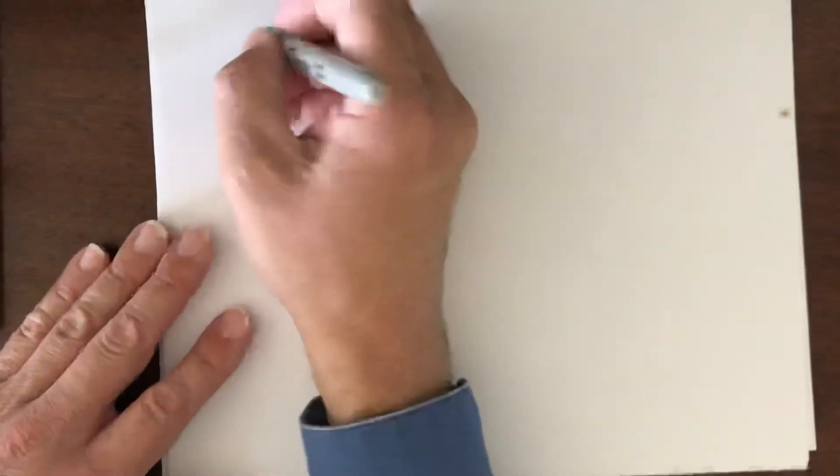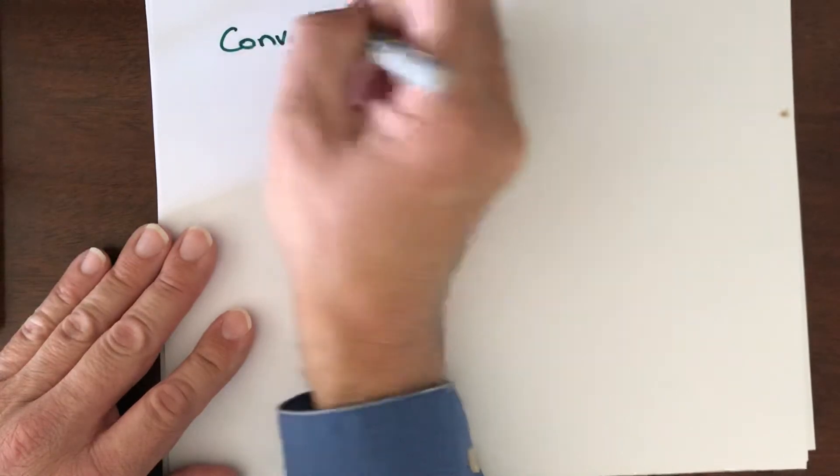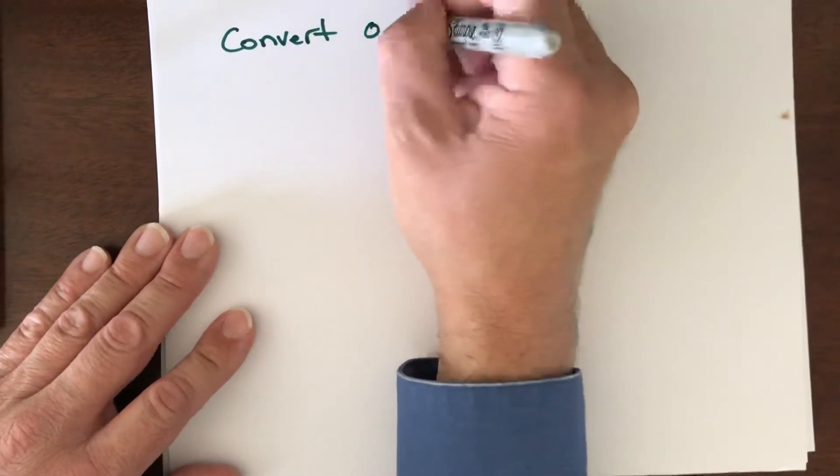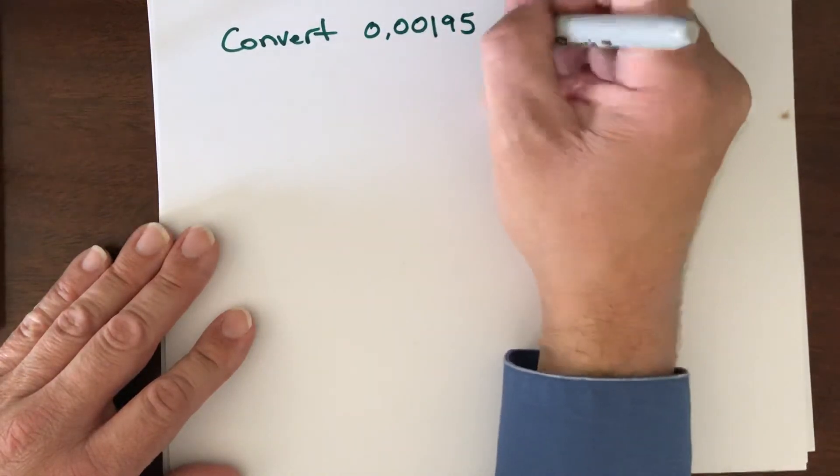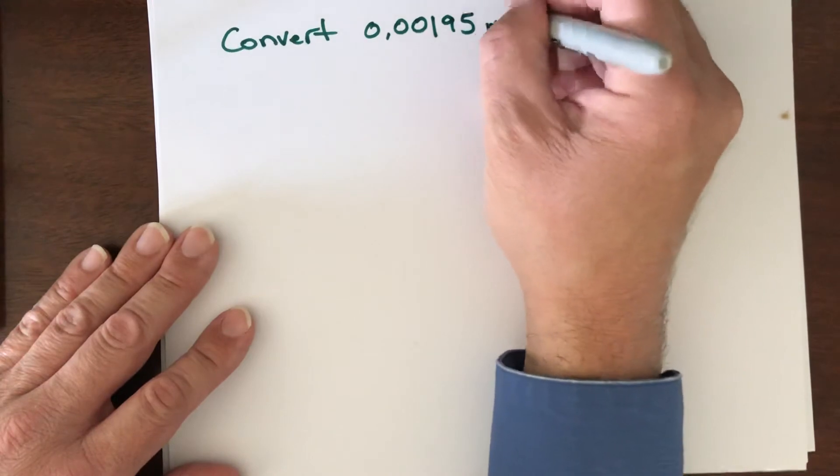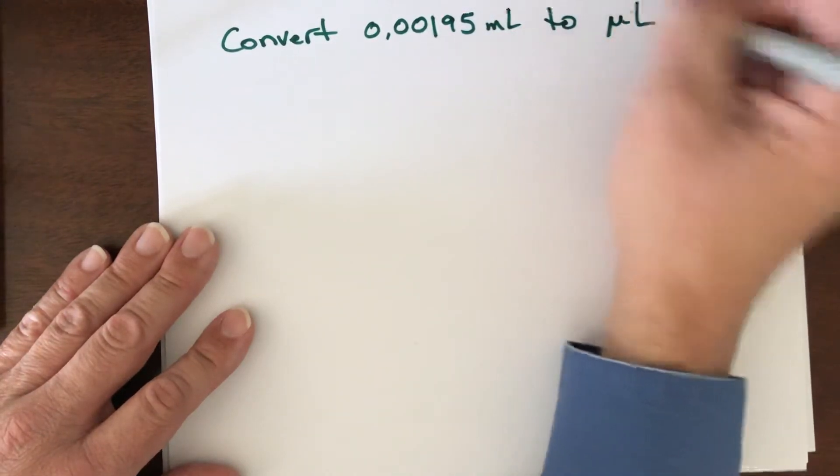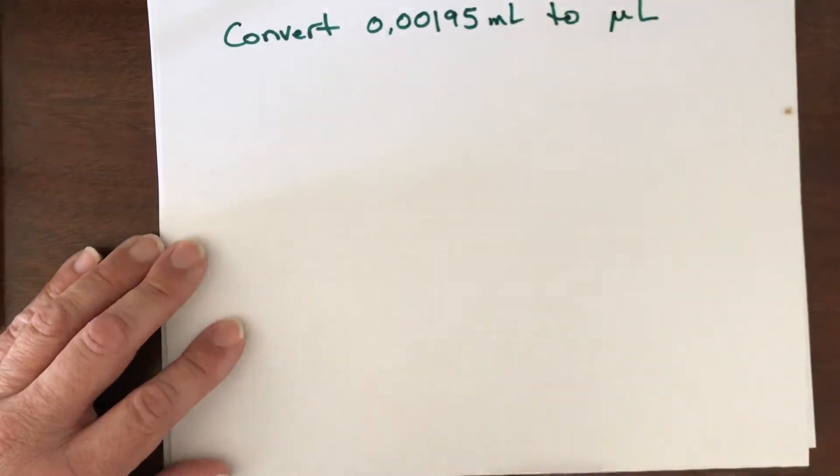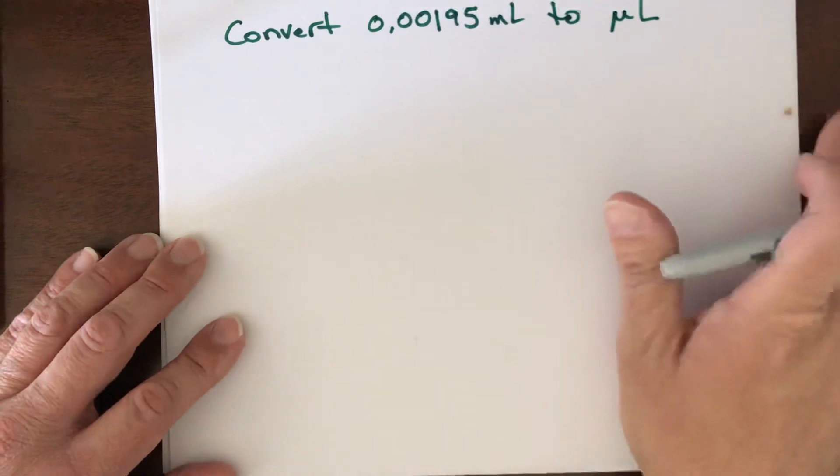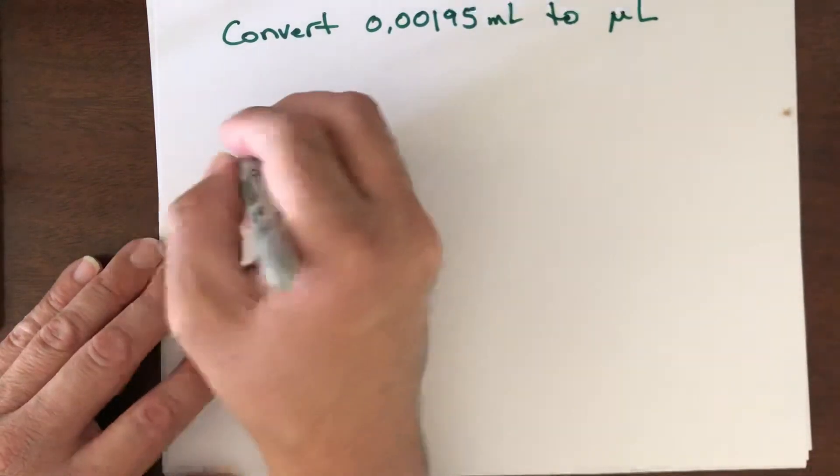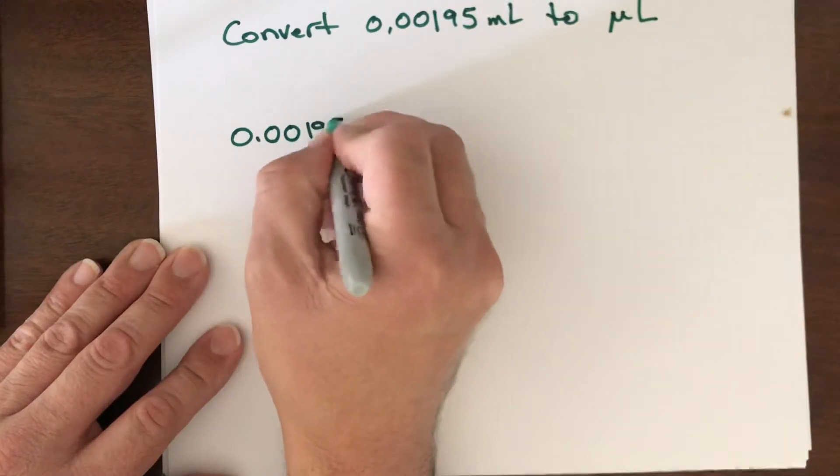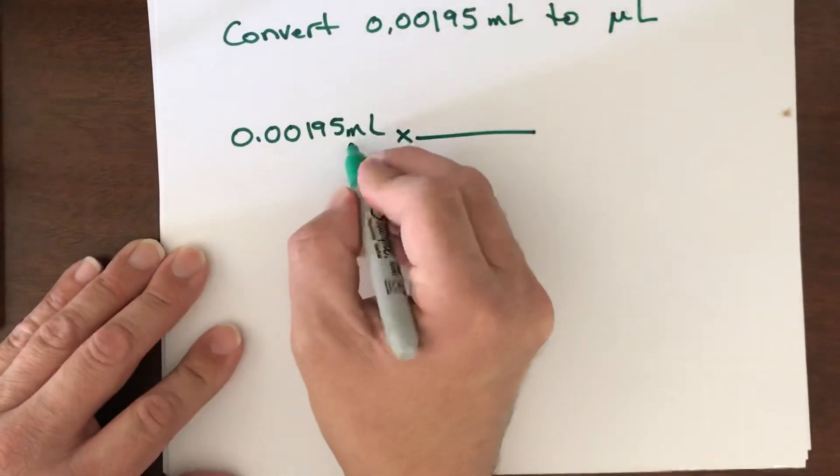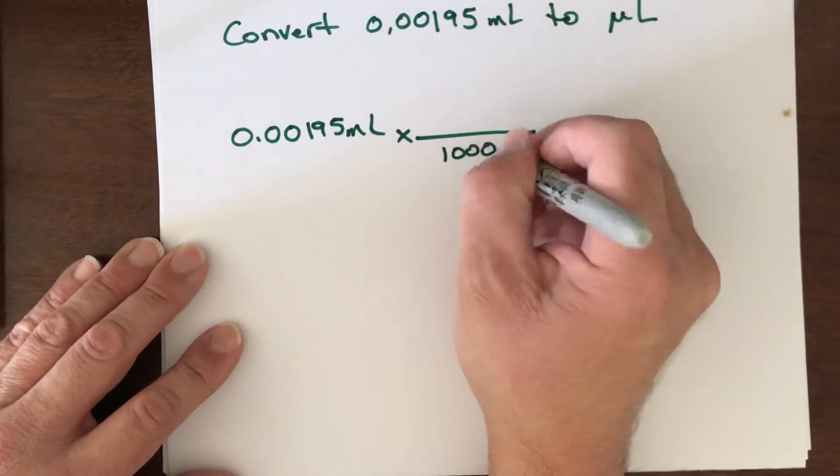All right and then we can do this with any unit whatsoever that we want. So one that comes up a lot in chemistry is milliliters. Let's say that you were asked to convert 0.00195 milliliters to microliters. Now there's two ways to do this, I'm going to show you the easiest one. We start with 0.00195 milliliters and we know that the milli prefix means a thousand.